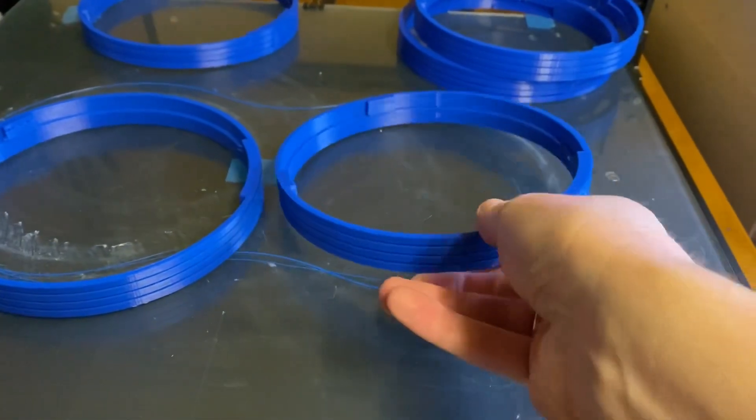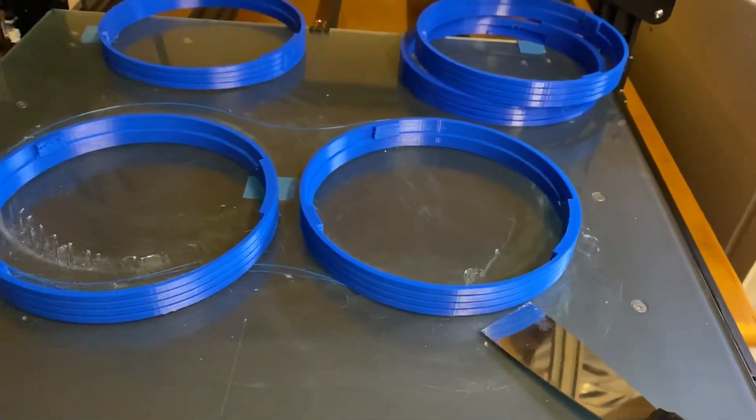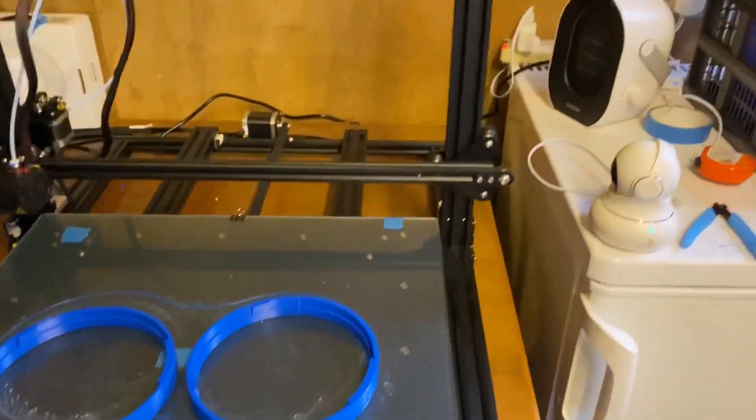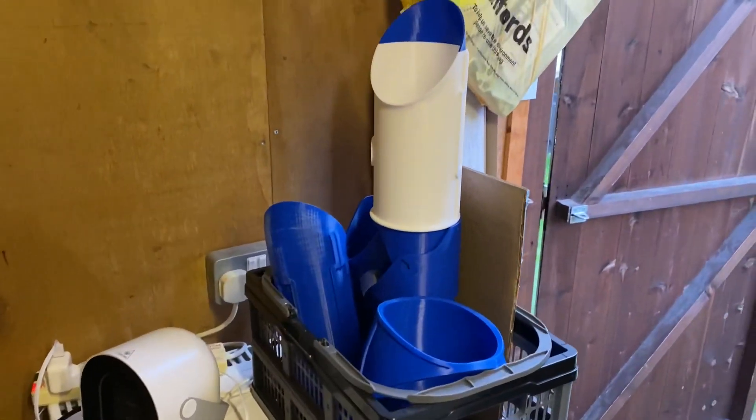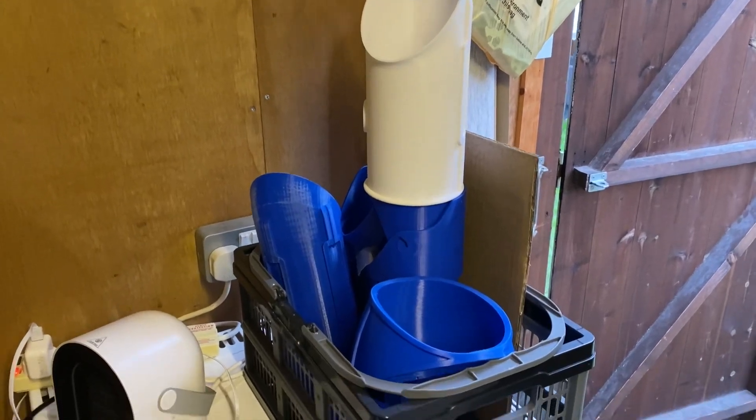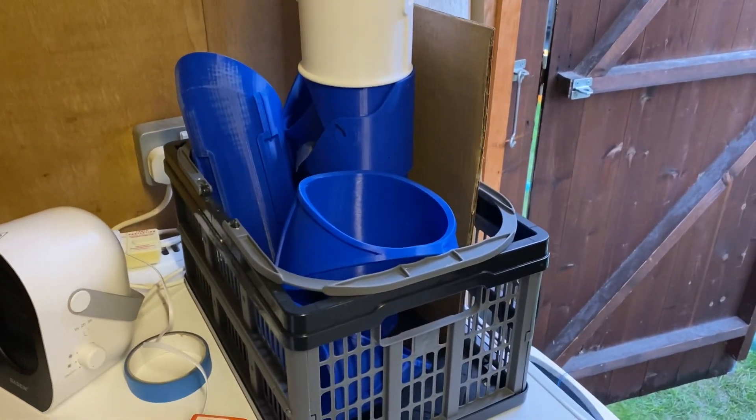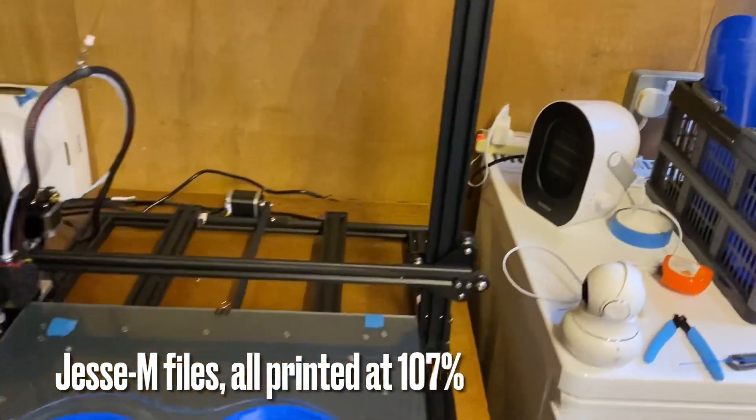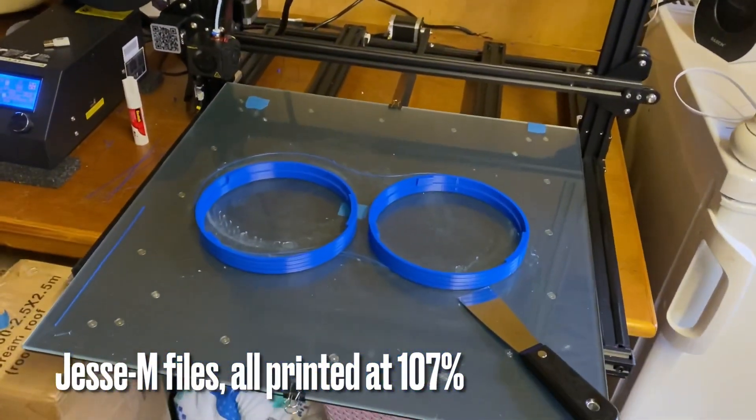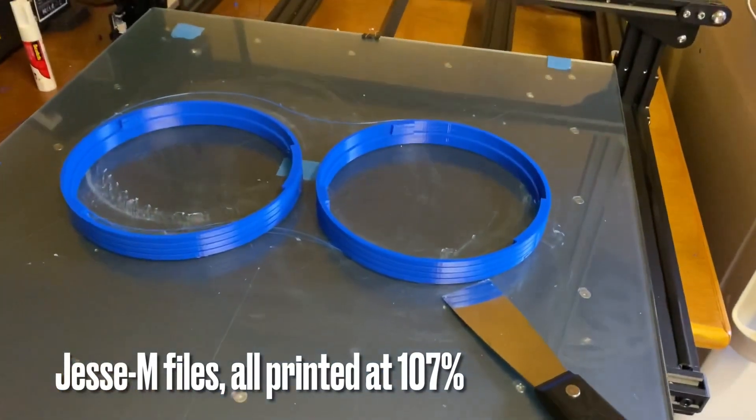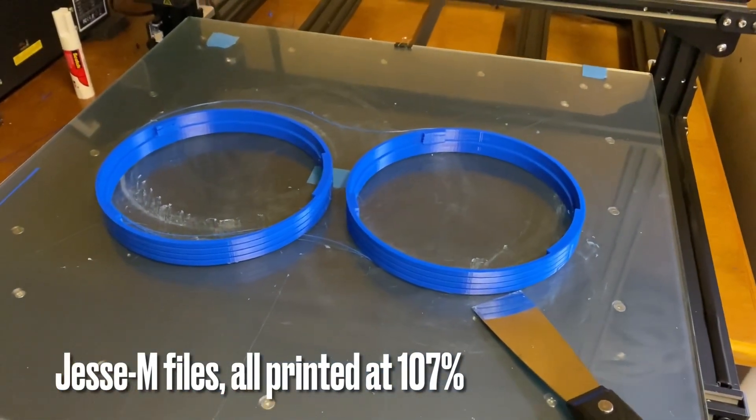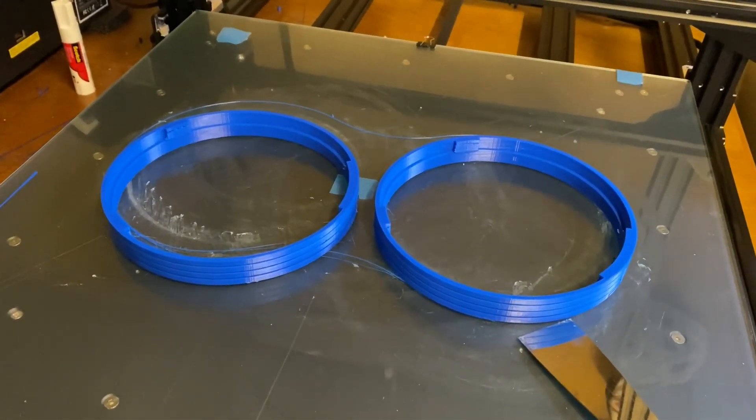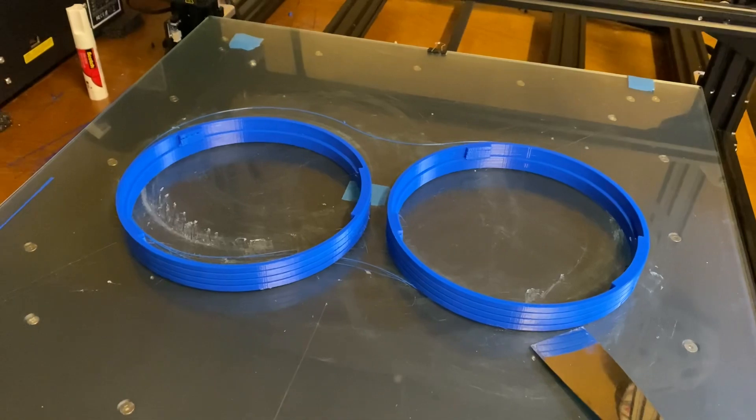So anyway, there we go, that's kind of that. I've now got two shoulder bearings, so these can go in the recycling, which is fun. And the box of parts is now growing. So again, obviously left and right arms, left and right shoulder bells, just need to print out some of the smaller parts. Thanks for that. As I say, the Jesse M files, 107% of the original size. And there we go, shoulder bearings for C-3PO. Thanks a lot, see you later.